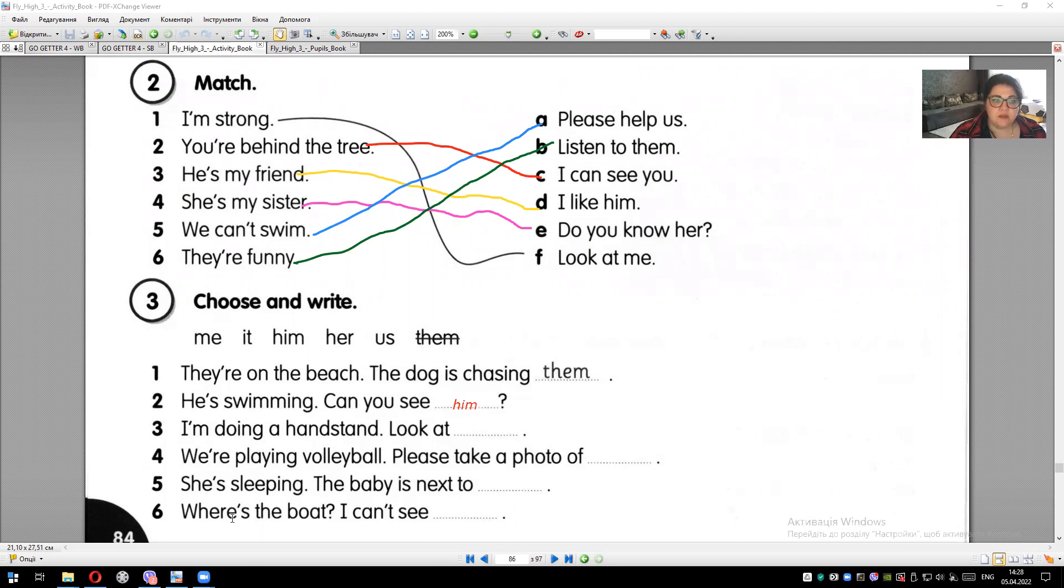Next. I'm doing a handstand. I'm standing on my hands. Look at - look at, of course, look at me. Look at me. We are playing volleyball. We're playing volleyball. Please take a photo of us. Please photograph us.